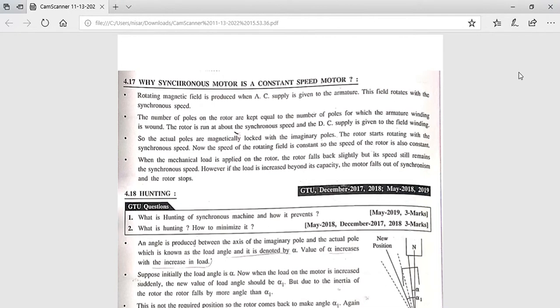Electrical machine chapter number four: synchronous motor. Last time we discussed synchronous motor torque equation and different types of torque. Today we'll discuss why synchronous motor is a constant speed motor.